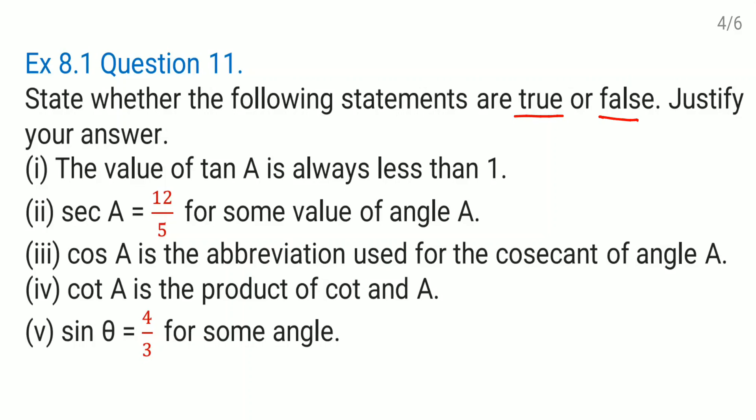Look at the first one: the value of tan A is always less than 1, they are saying. So first let us draw one right angle triangle here to see this one and we'll name it as A, B, and C.